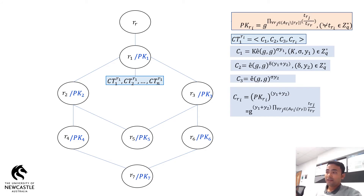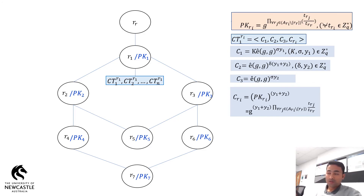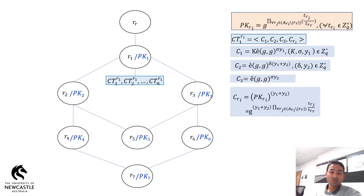For example, if the content of R2 is encrypted using public key PK2, then any consumer from the R2 category as well as any consumer from the R1 and root category can decrypt it. Afterwards, the content provider combines both the symmetric key encryption part of the ciphertext and the RBE part of the ciphertext into one file and sends it to the consumer.